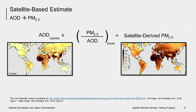Once a combined satellite aerosol optical depth is obtained, the next step is to use information from an atmospheric model to estimate PM2.5. Though near-surface PM2.5 and AOD are related, their relationship can be highly variable and dependent on variables that aren't necessarily observed. A model can be an invaluable tool when trying to estimate PM2.5 across the globe. The ratio of near-surface PM2.5 to AOD is taken from a model for each grid cell and applied to the combined AOD to calculate a global PM2.5 estimate.